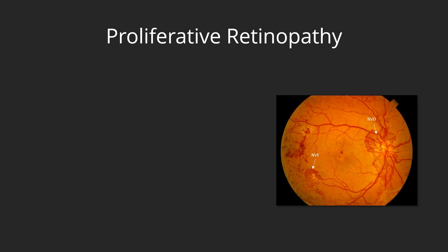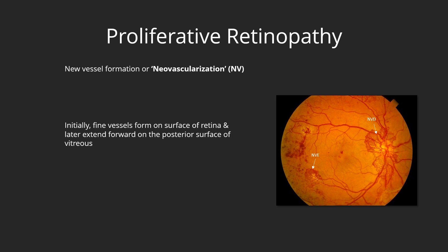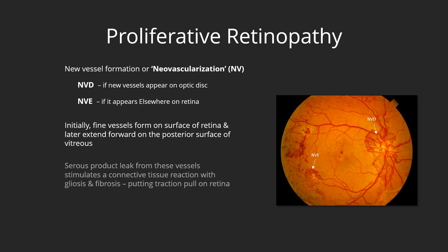Proliferative diabetic retinopathy is characterized by the growth of new blood vessels on the retina, which may later extend forward on the posterior surface of the vitreous. New vessel formation is called neovascularization. It is denoted as NVD if new vessels appear on the optic disc, and NVE if it appears on the retina elsewhere. Serous products leak from these vessels, stimulating a connective tissue reaction with gliosis and fibrosis, putting tractional pull on the retina. This pull may lead to tractional retinal detachment.